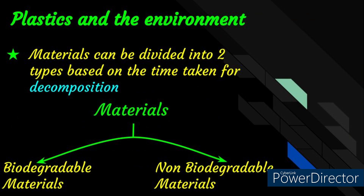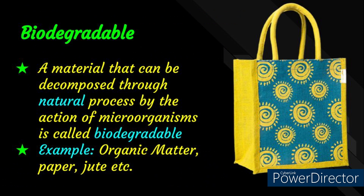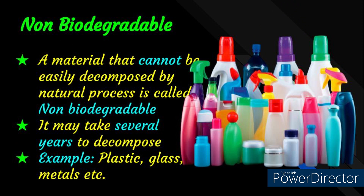Materials around us can be divided into two groups based on the time taken for decomposition: biodegradable and non-biodegradable materials. Biodegradable materials are those which get decomposed through natural processes like the action of microorganisms — examples include organic matter, paper, and jute. Non-biodegradable materials are those which are not easily decomposed by natural processes and may take several years to decompose — examples include plastic, glass, and metals.